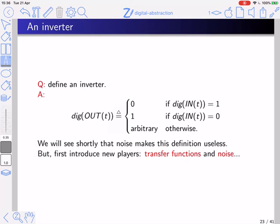Let's try to define an inverter. An inverter is a device that, given input In(t), produces output Out(t) such that: the digital interpretation of Out(t) is 0 if the interpretation of In(t) is 1; the digital interpretation of Out(t) is 1 if the interpretation of In(t) is 0; and if In(t) is non-logical, the inverter can output whatever it wants. We will see that this definition is useless, and one of the causes of its failure in practice is noise.